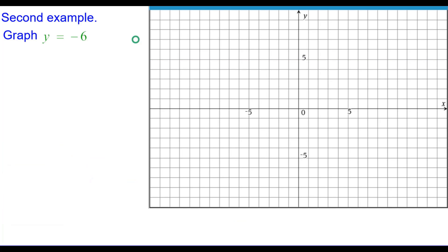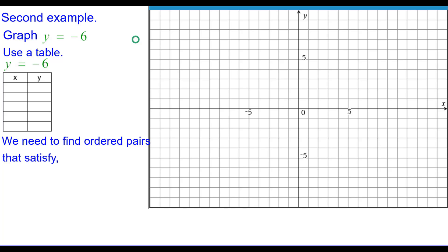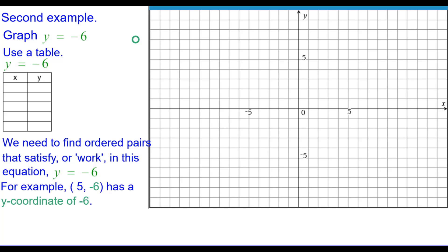Second example, let's graph y equals negative 6 again using a table. We need to find ordered pairs that satisfy or work in this equation. Y equals negative 6. One such ordered pair would be 5 comma negative 6 because it has a y coordinate of negative 6. So we put that in the table and we plot it.